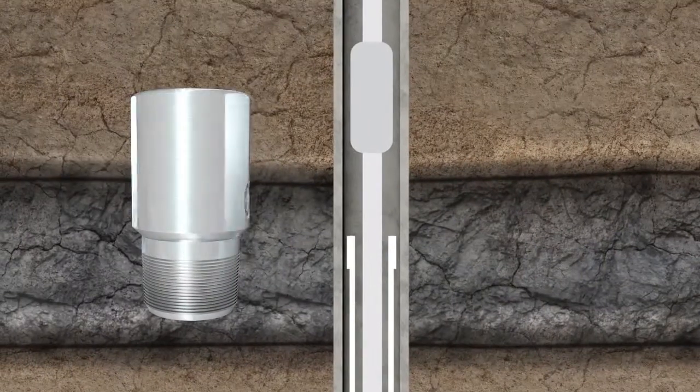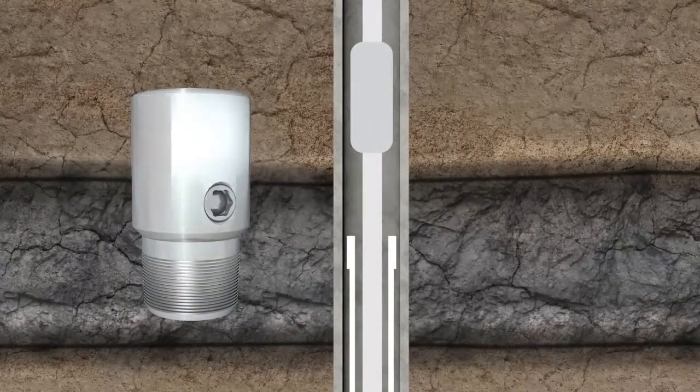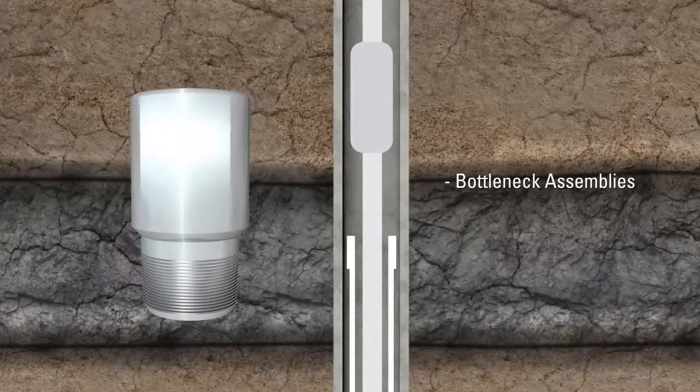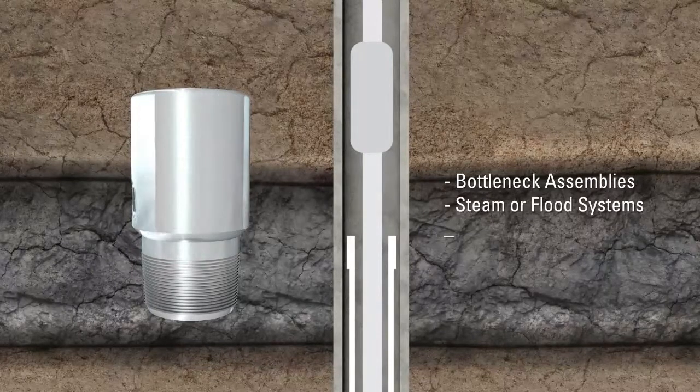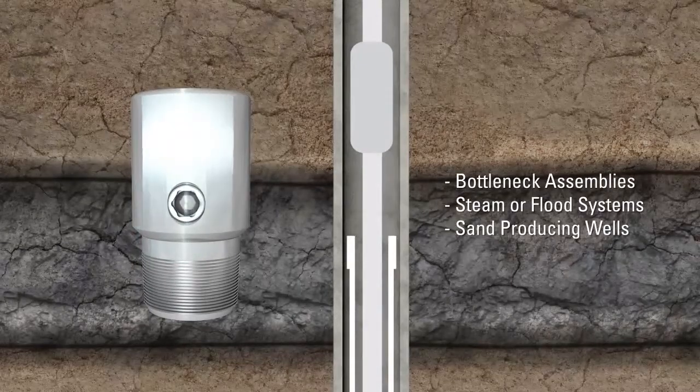Fyke's HTD is installed on production wells with a number of varying factors, such as bottleneck assemblies, steam or water flood systems, sand-producing wells, and other conditions.